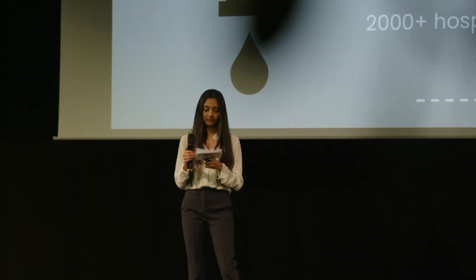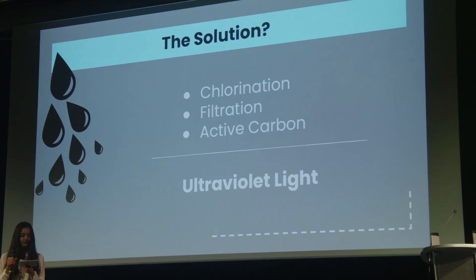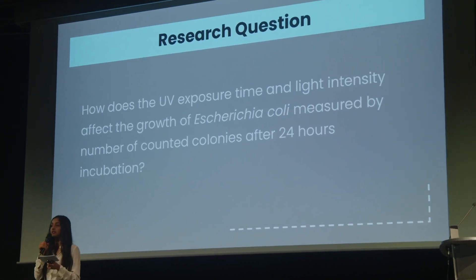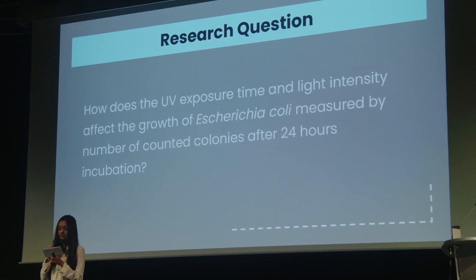As characteristic of gram-negative bacteria, the E. coli lipid membrane acts as a barrier to permeation of antibiotics, making it increasingly difficult to treat. While there are many water treatment solutions ranging from chlorination, filtration, and using active carbon — each with their own advantages and disadvantages — the one of special interest to me was ultraviolet light. This led me to developing the research question of how UV exposure time and light intensity affect the growth of E. coli, measured by the number of counted colonies after 24 hours of incubation.